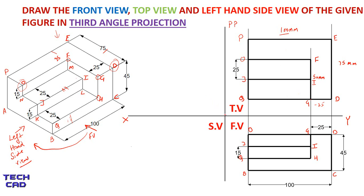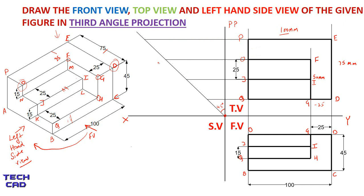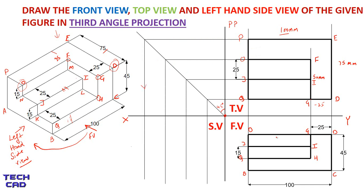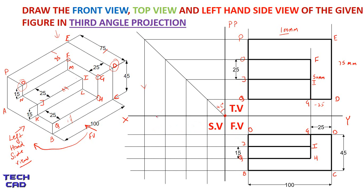For the side view, I make a line at 45 degrees from the intersection of the XY and profile plane lines. From the top view I take projections towards this 45-degree line, then take projections from the 45-degree line downward. I also take projections from the front view. Wherever these projection lines from the top view and front view intersect gives me the side view. This will be the left hand side view.